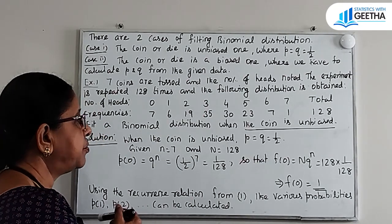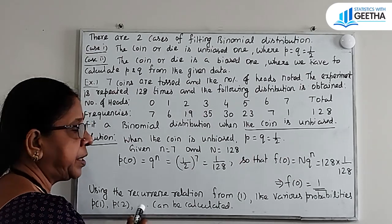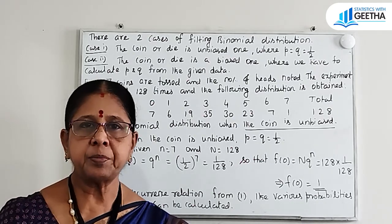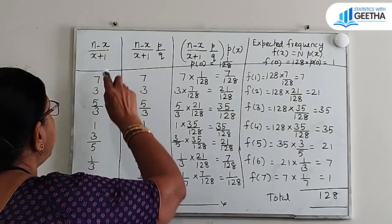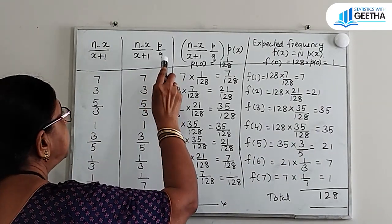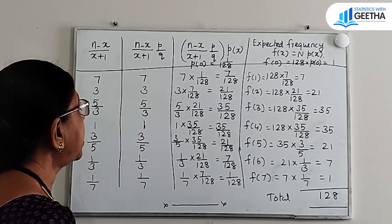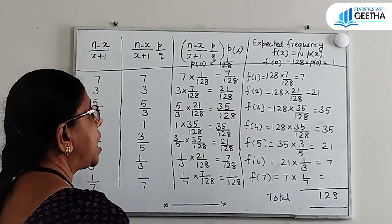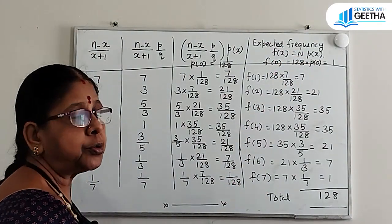Using the recurrence relation from equation 1, the various probabilities P(1), P(2), P(3), etc. can be calculated. We tabulate: first column is (n−x)/(x+1), then p/q, then P(x), and then the expected frequency F(x) = N × P(x).